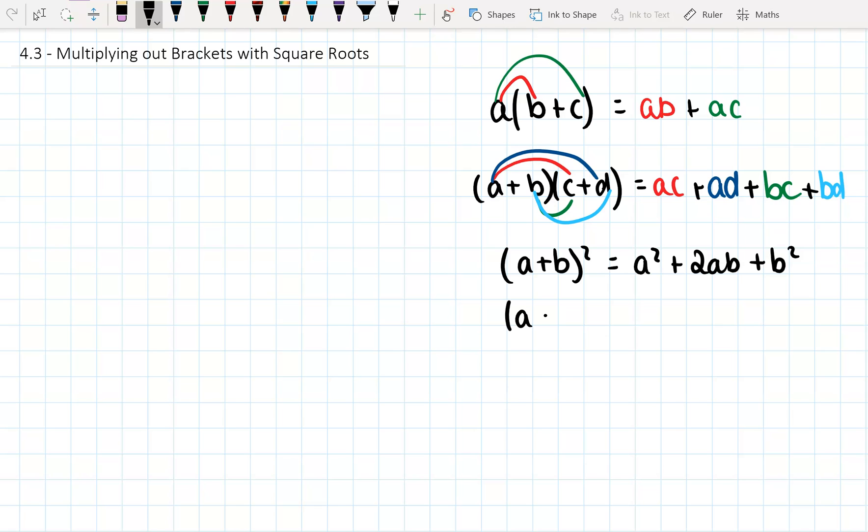So the shortcut for (a + b)² was a² + 2ab + b². And remember, 2ab just means you multiply a and b together and then double them. Alright. (a - b)² is the same, except we have a minus here, -2ab. And then it's still plus b², because remember, a negative times a negative gives you a positive.